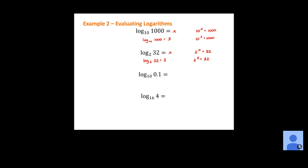Same thing on the next one: 10 to the x power equals 0.1. It's probably better to think about this as a fraction — this is really 10 to the x equals 1/10. We have a 10 in the denominator, which means we need a negative exponent to move that 10 down to the bottom. This is 10 to the negative 1 equals 1 over 10. So x equals negative 1, and the base 10 log of 0.1 is equal to negative 1.